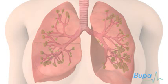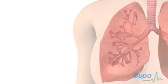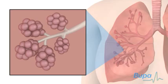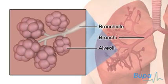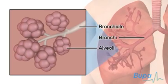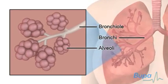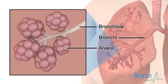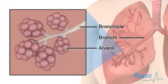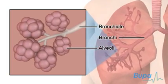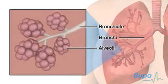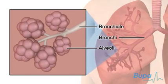The bronchi are the large tubes or airways in the lungs. Air or oxygen flows through these tubes. The bronchi branch and narrow into tubes called bronchioles. The bronchioles continue to branch and end with tiny air sacs called alveoli.